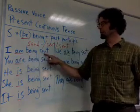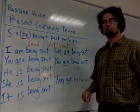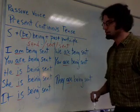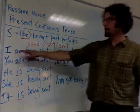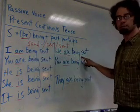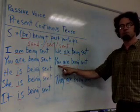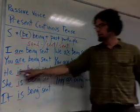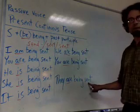I am being sent. You are being sent. He is being sent. She is being sent. It is being sent. In the plural form, I and you become we — we are being sent. The plural form for you is you — you are being sent. And the plural for he, she, and it is they — they are being sent.